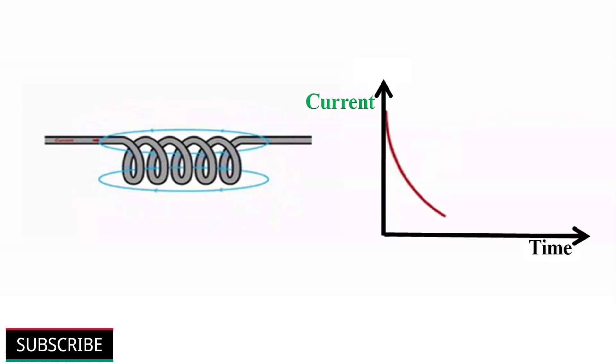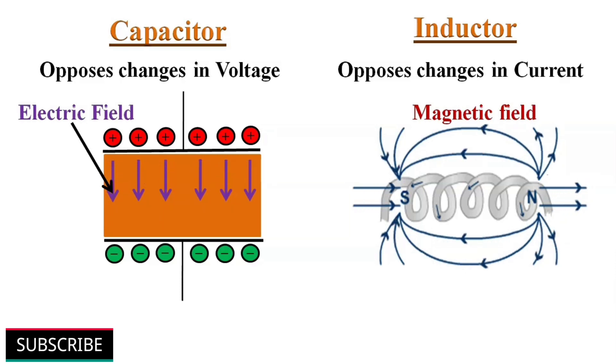The current in an inductor cannot instantly change. It always lags by a certain amount of time. In the previous video, we discussed how capacitors work. The main difference between a capacitor and an inductor is that a capacitor opposes a change in voltage, while an inductor opposes a change in current. Furthermore, a capacitor stores energy in the form of an electric field, and an inductor stores energy in the form of a magnetic field.